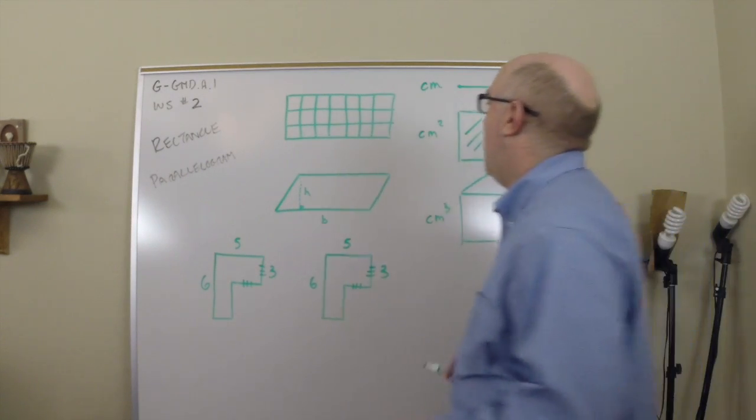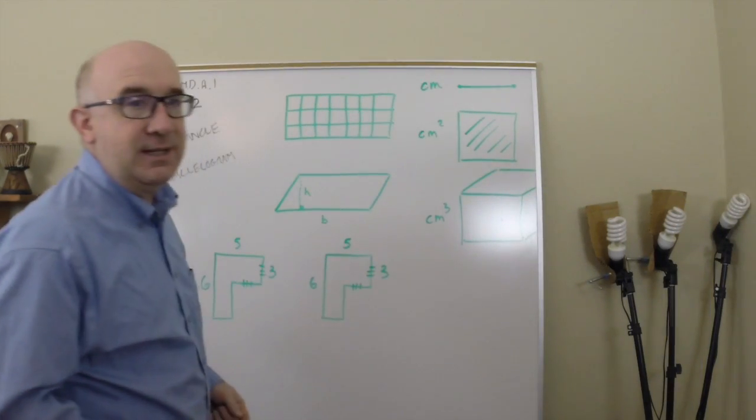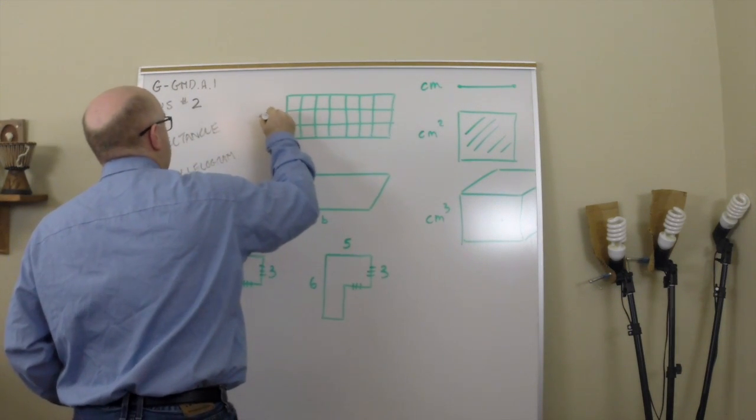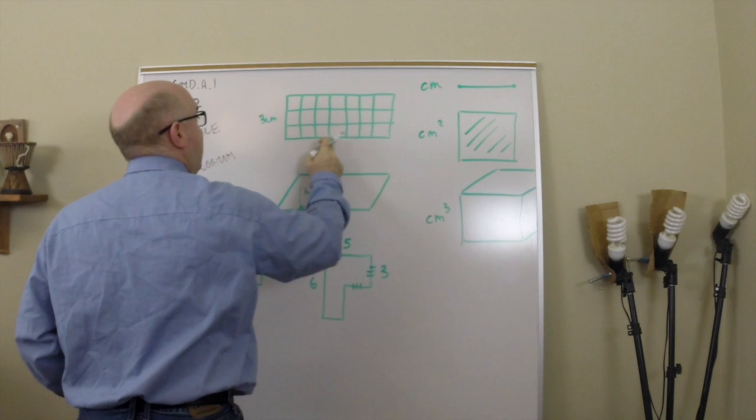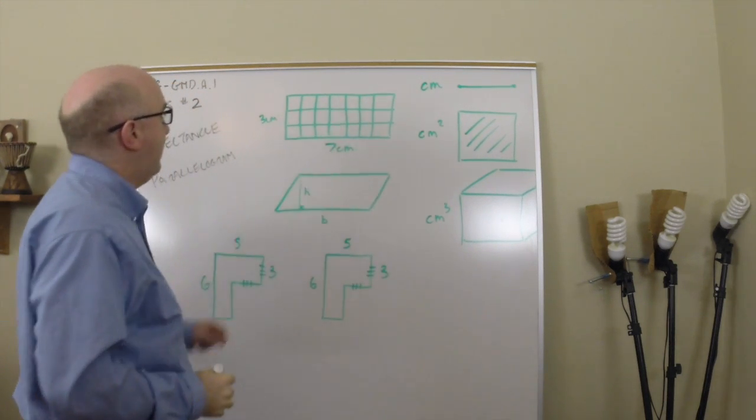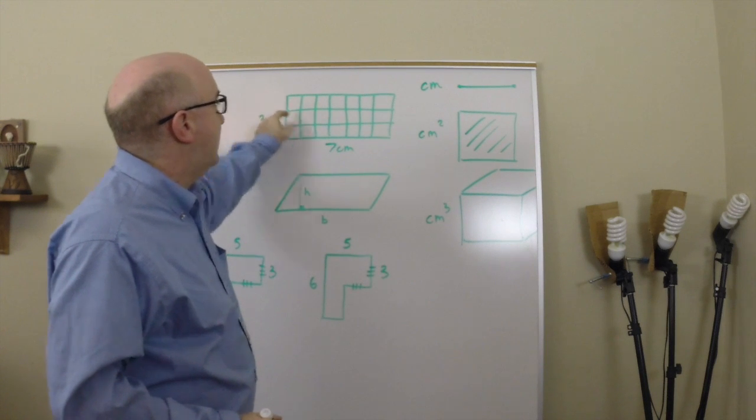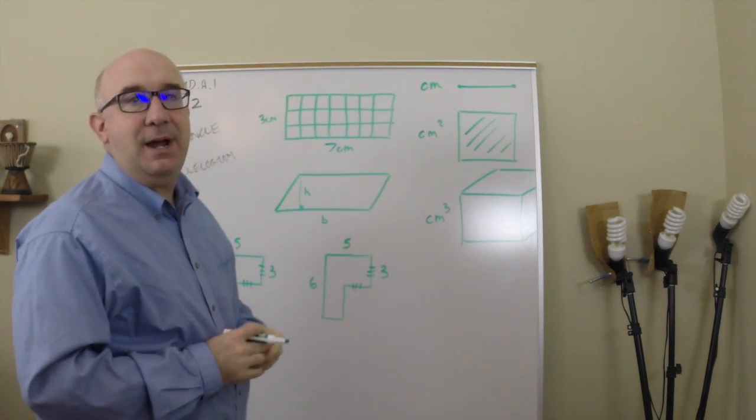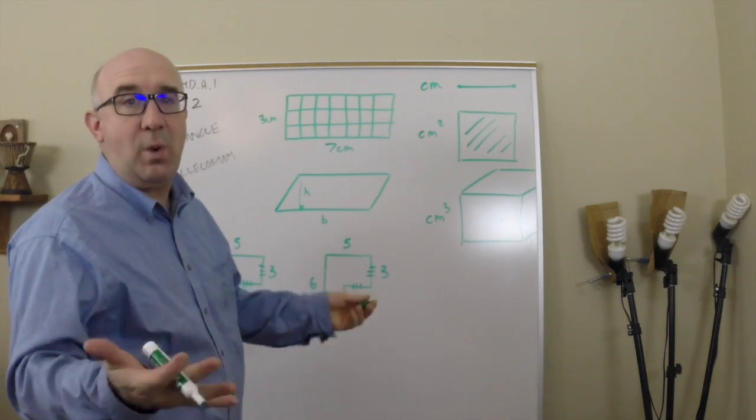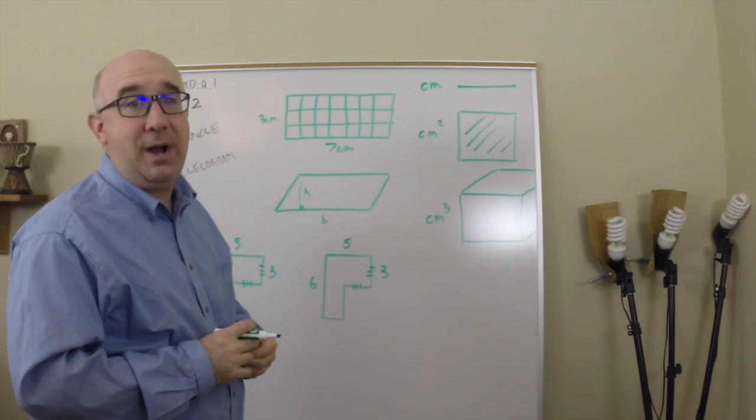So why the rectangle is our first formula is it's gridded out, basically. If you had three centimeters here, and one, two, three, four, five, six, seven centimeters here, that would mean that there are 21 cubes in that, and it would be 21 centimeters squared. In other words, 21 squares.